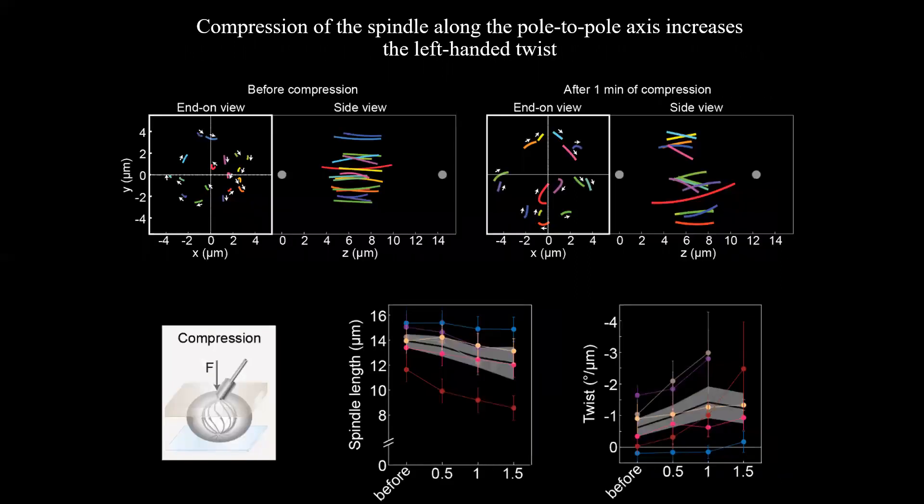The biological role of spindle chirality is still unknown. To test the idea that the chiral shape may help the spindle to absorb mechanical load, we compress the spindles along the pole-to-pole axis. Traces of the microtubule bundles in the end-on view after one minute of compression were more rounded than before compression, indicating an increase in twist while the mitotic spindle shortened. Although chirality may be simply a side effect of the activity of torque-generating motors, the twisted shapes of microtubule bundles may contribute to spindle physiology by allowing changes of spindle shape as a mechanical response to external forces.